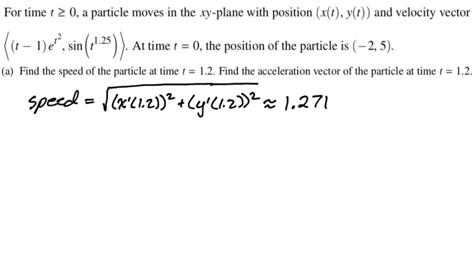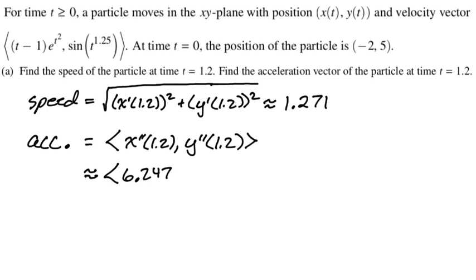Acceleration is going to be the double primes, right? So it's a vector with x double prime of t and y double prime of t, and we're plugging in 1.2. So we get this. It's approximately, according to the calculator, 6.247 comma 0.405.